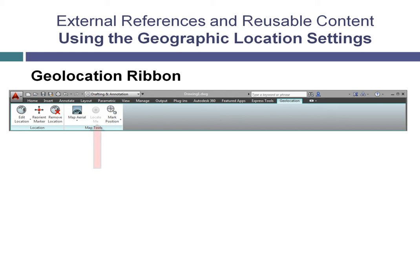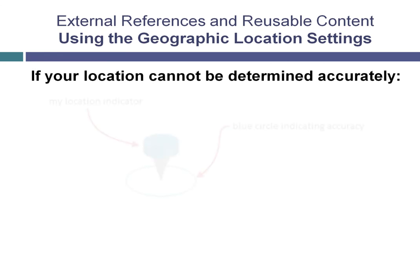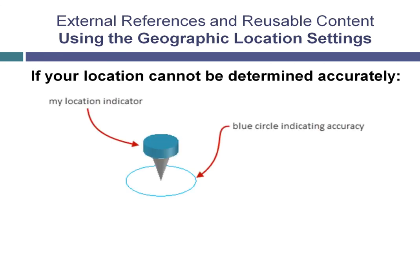If your computer has a GPS-enabled device and the device is active, the Locate Me tool becomes available. When you click this tool, the system displays the My Location indicator in model space at the position corresponding to your current location. If you move, the My Location indicator also moves. If your position cannot be determined accurately, a blue circle is displayed around the My Location indicator. The smaller the circle, the greater the accuracy. To turn tracking off, you can simply click the My Location button again.